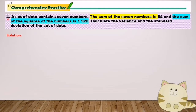Question number 4. The set of data contains 7 numbers. The sum of the 7 numbers is 84 and the sum of the squares of the numbers is 1920. Calculate the variance and the standard deviation of the set of data. To answer this type of question, I will list out the important information. First, n equals 7 because there are 7 numbers.